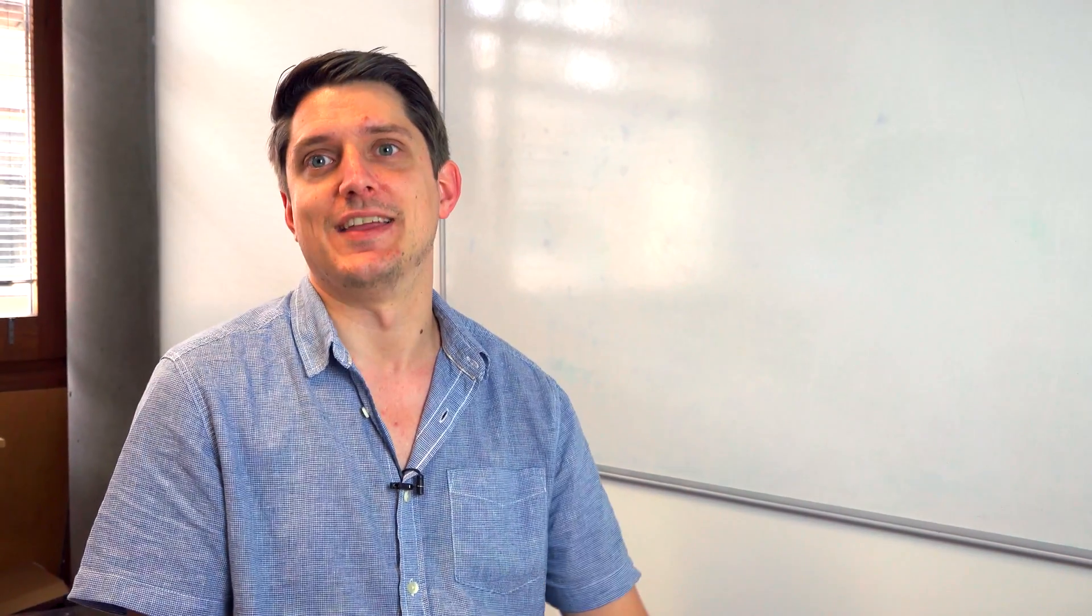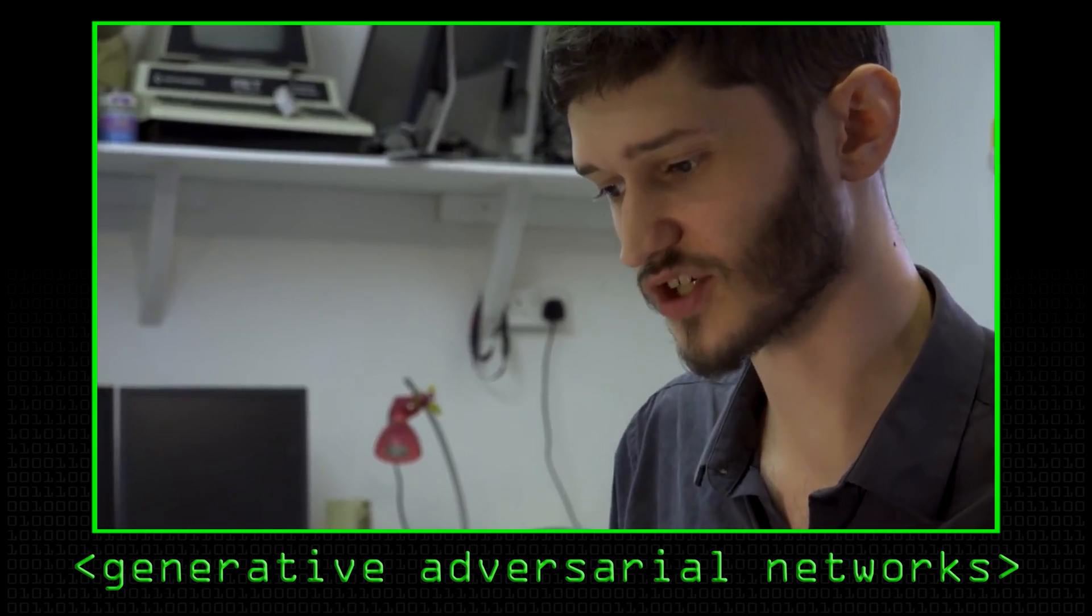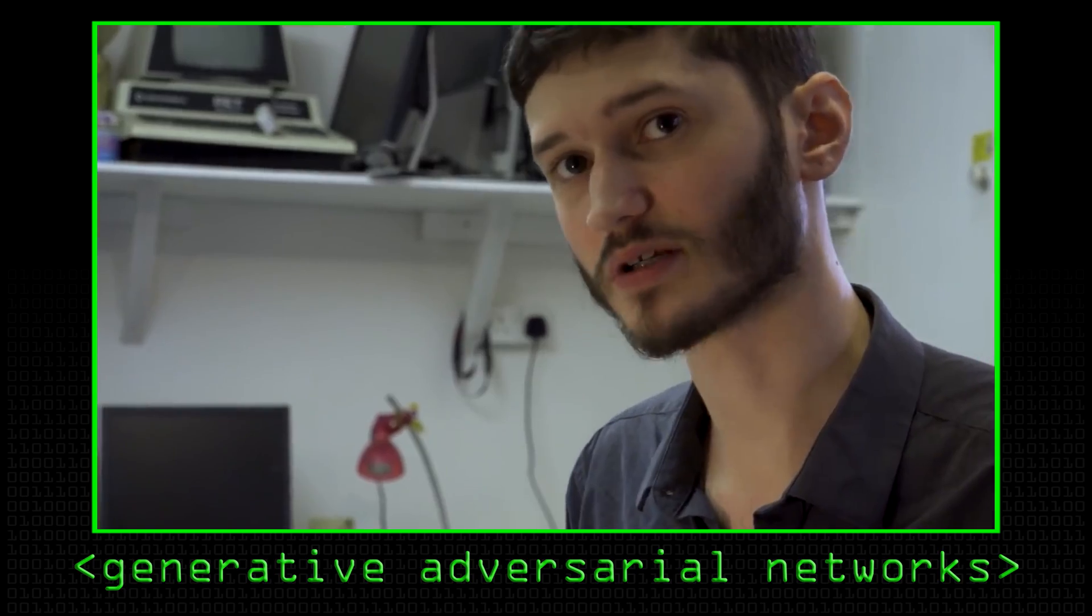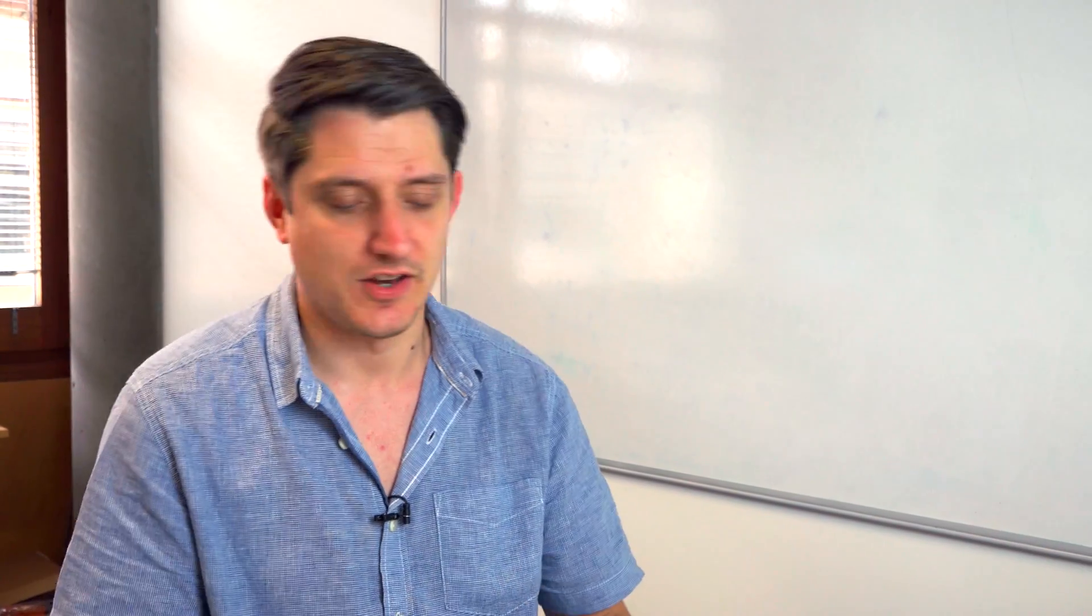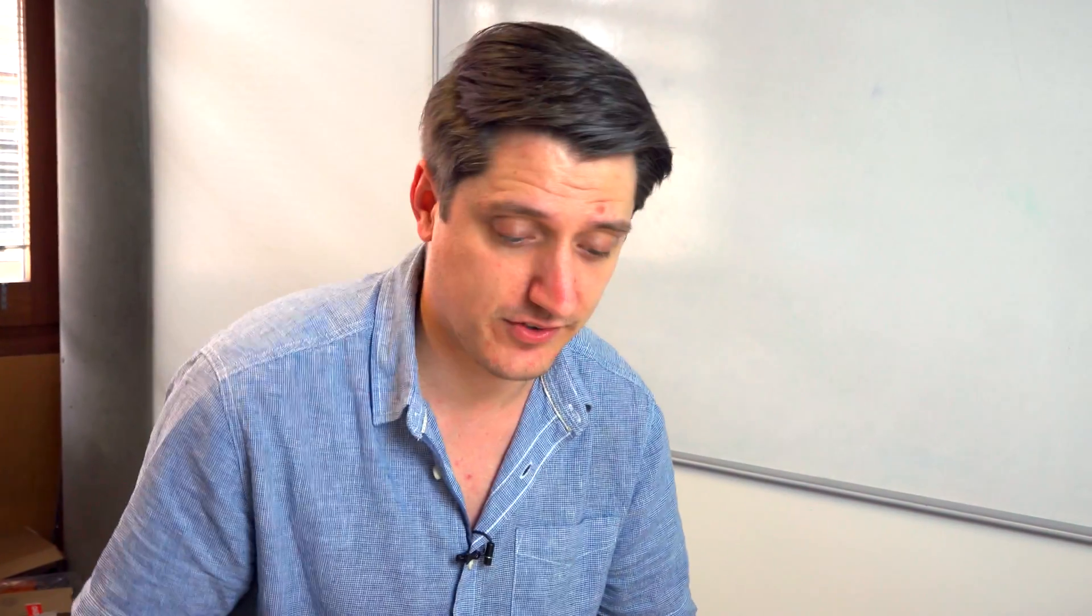Today we're going to talk about CycleGAN, which is a really interesting innovation in generative adversarial networks. Rob has already covered what a GAN is and what it's used for. Typically, generating images of interest, pictures of trees, people, buildings, you can train GANs to do these kind of things.